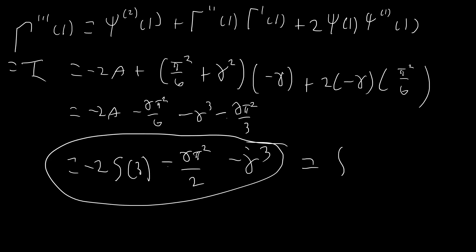It's so cool how we were able to transform this crazy integral into just an expression involving the gamma and digamma functions. We could keep going — finding the integral of e to the negative x times ln x to the fourth, or changing the integrand to include x to some power like x to the one half, since that's just the gamma function evaluated at a different value. Thank you guys for watching — I had a lot of fun and I hope to see you in the next video.